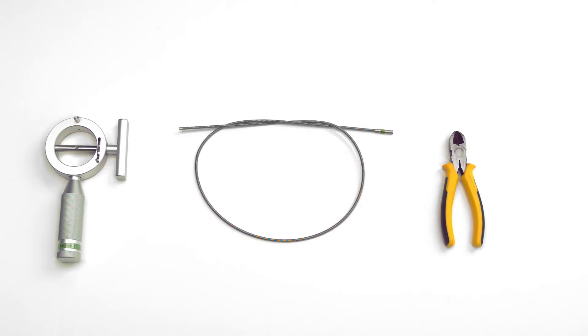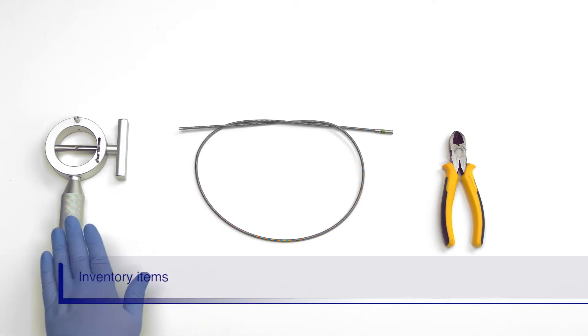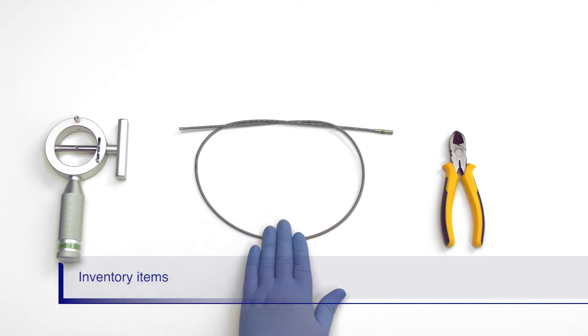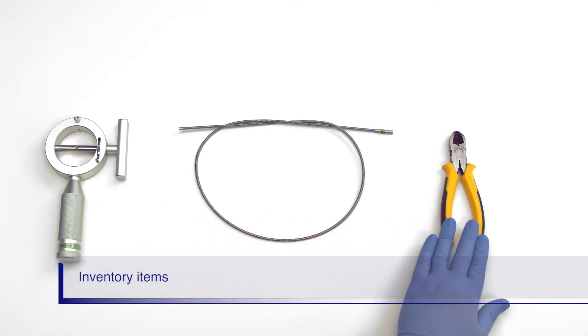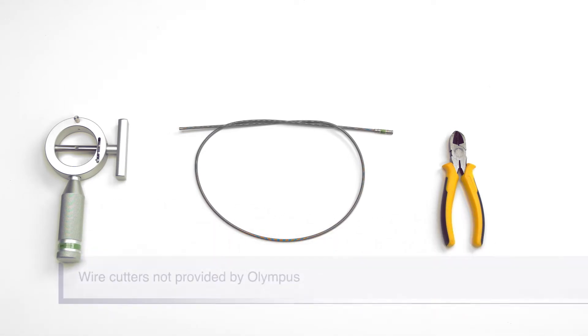Before we review the procedure for the emergency lithotriptor handle, we will need to inventory our supplies. You will need the emergency lithotriptor handle, coil sheath, and wire cutters. The wire cutters need to be of good quality. Bandage scissors will not work.